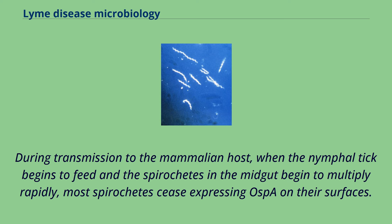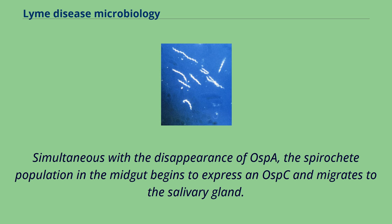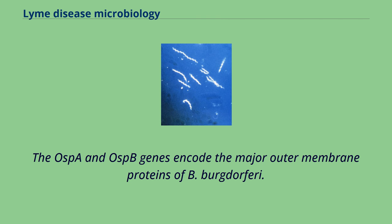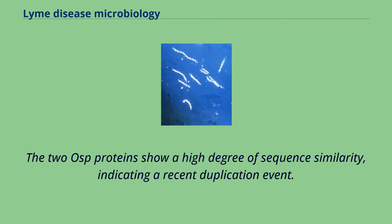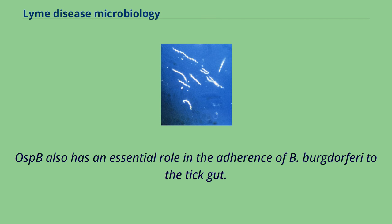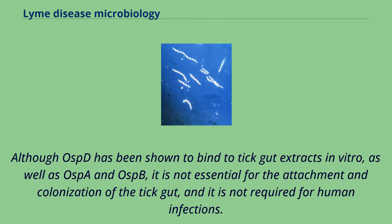During transmission to the mammalian host, when the nymphal tick begins to feed and the spirochetes in the midgut begin to multiply rapidly, most spirochetes cease expressing OSPA on their surfaces. Simultaneous with the disappearance of OSPA, the spirochete population in the midgut begins to express OSPC and migrates to the salivary gland. Upregulation of OSPC begins during the first day of feeding and peaks 48 hours after attachment. The OSPA and OSPB genes encode the major outer membrane proteins of B. burgdorferi. The two OSP proteins show a high degree of sequence similarity, indicating a recent duplication event. Virtually all spirochetes in the midgut of an unfed nymph tick express OSPA. OSPA promotes the attachment of B. burgdorferi to the tick protein TROSPA, present on tick gut epithelial cells. OSPB also has an essential role in the adherence of B. burgdorferi to the tick gut. Although OSPB has been shown to bind to tick gut extracts in vitro, as well as OSPA and OSPC, it is not essential for the attachment and colonization of the tick gut, and it is not required for human infections.